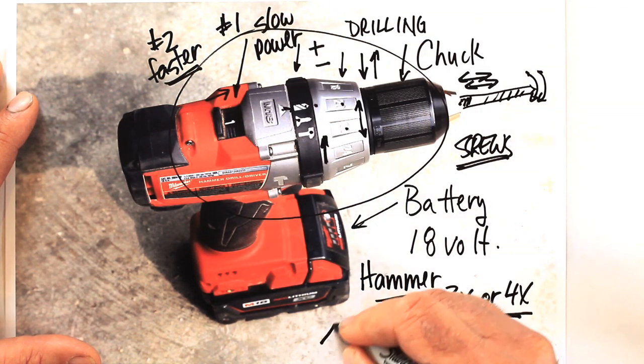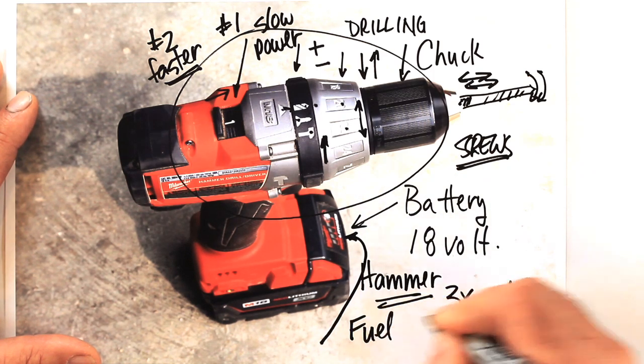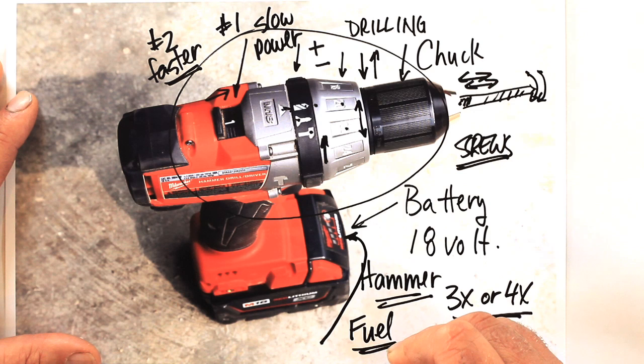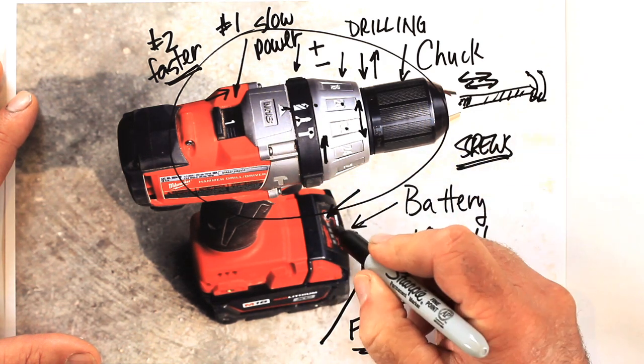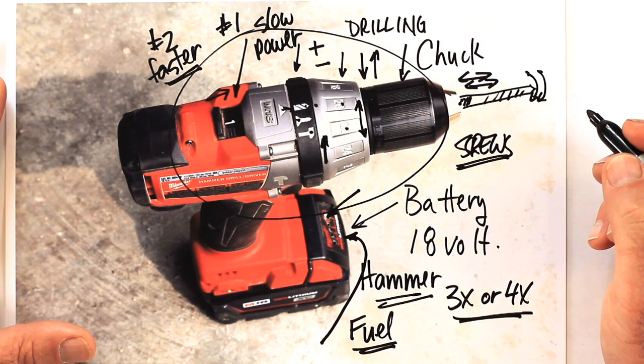Now one other thing I want to point out here, not all drills have this. It's generally called a fuel gauge. It really just shows you the state of charge of the battery at a glance. You push this button here and the different lights light up, and it indicates how much juice there's left in the battery.